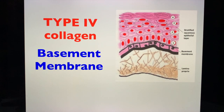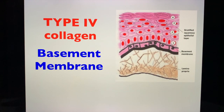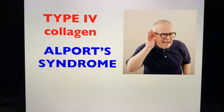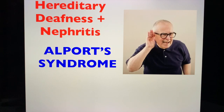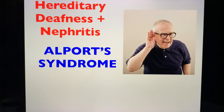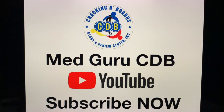Type 4 collagen, as mentioned, is the basement membrane — shown right here in the illustration. An important clinical pearl is Alport syndrome, which results from a mutation in type 4 collagen — specifically the basement membrane of the kidneys. It presents with hereditary deafness and nephritis. Please memorize: Alport syndrome presents with hereditary deafness and nephritis, resulting from a genetic mutation of type 4 collagen found in the basement membrane.